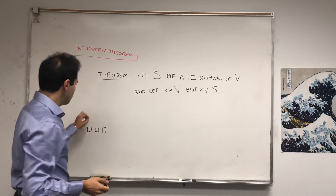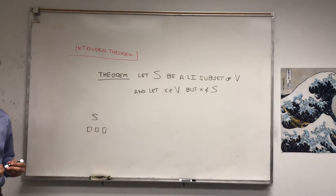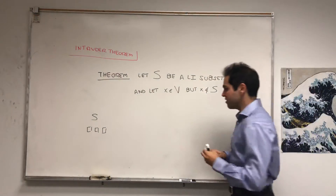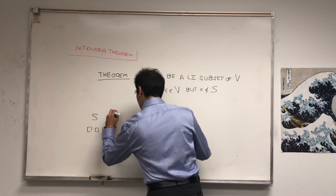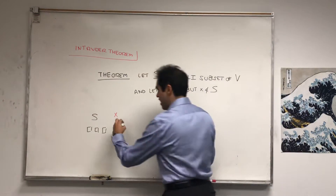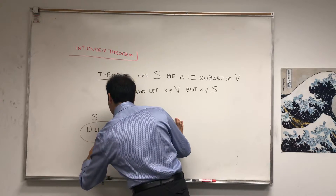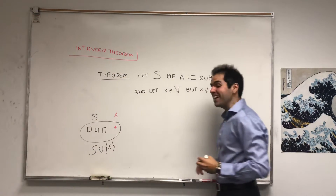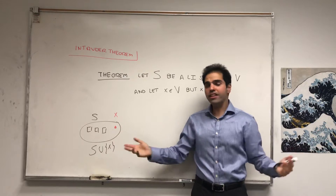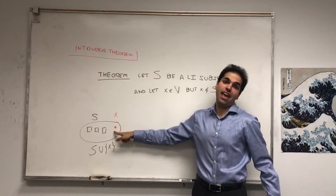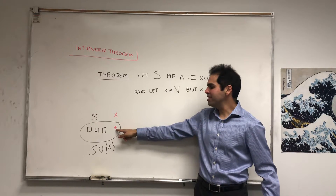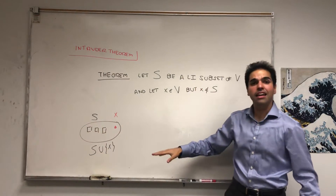Suppose you start with a linearly independent set S and you add the vector X to it. So suppose you add X and suddenly you see that this new set, S union X, is suddenly linearly dependent. What does that mean? It kind of means it's X's fault — X is the intruder — and mathematically what this means is X has to be in the span of S.